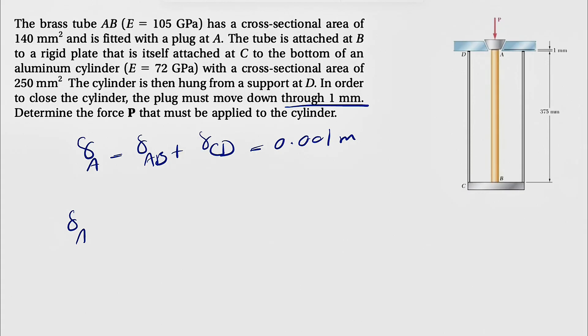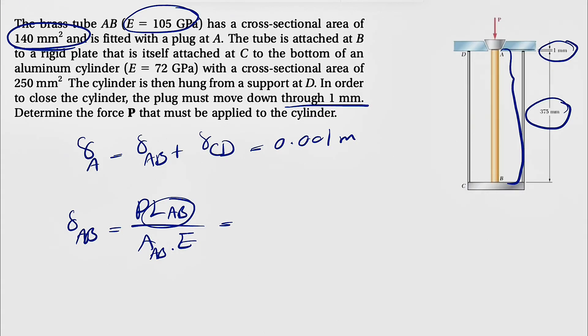Now we have to find the deflection of AB using the formula we've discussed: PL_AB over the area of AB times elastic modulus. AB is made of brass, so we have the information from the beginning. The force P is what we're trying to figure out. The length AB would be the original length, which is 1 mm plus 375, so this will be 376 divided by 1000, so 0.376 times P.